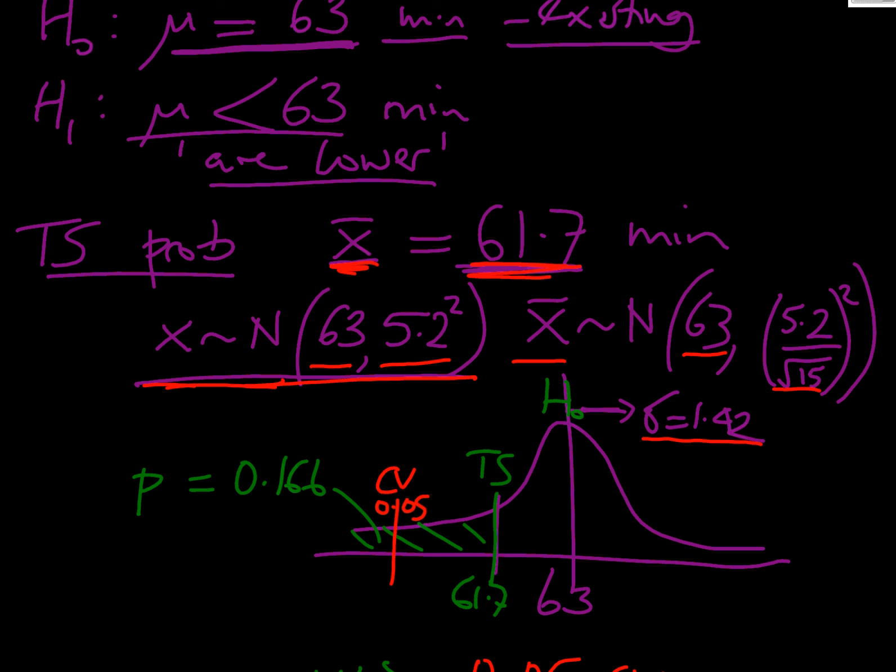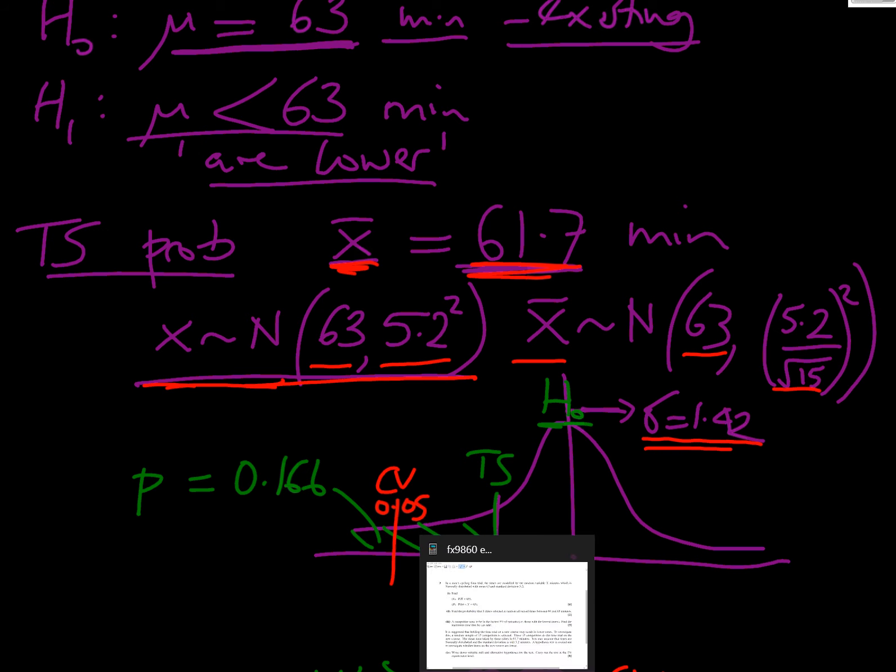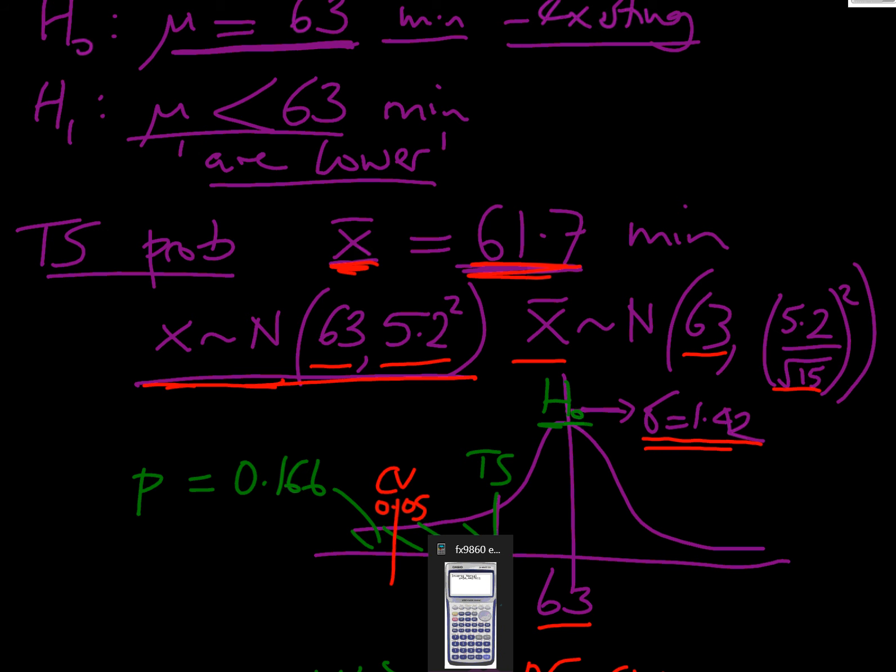Now let's draw our graph. Here we've got our mean of 63, we've got a standard deviation of 1.42. So our status quo, H0, is that it's 63. We've got a test statistic at 61.7, which is lower. And we can go into our calculator now and work out our probability of that occurring.